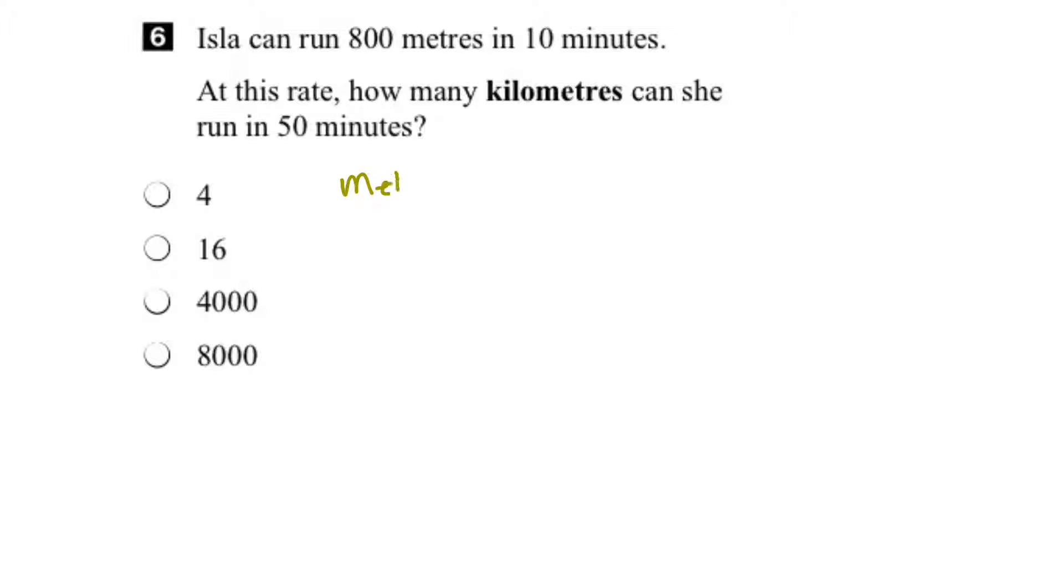Let's take a look at method number one. We could use ratio and proportion here. We're given the rate which is 800 meters in 10 minutes, and given that she's going to continue at the same rate, then that would equal some number of meters in 50 minutes. Now what we want to do is isolate our unknown, so what we can do is cross multiply.